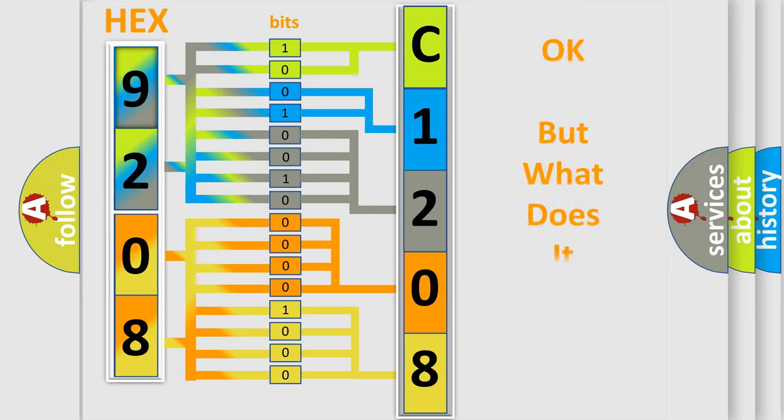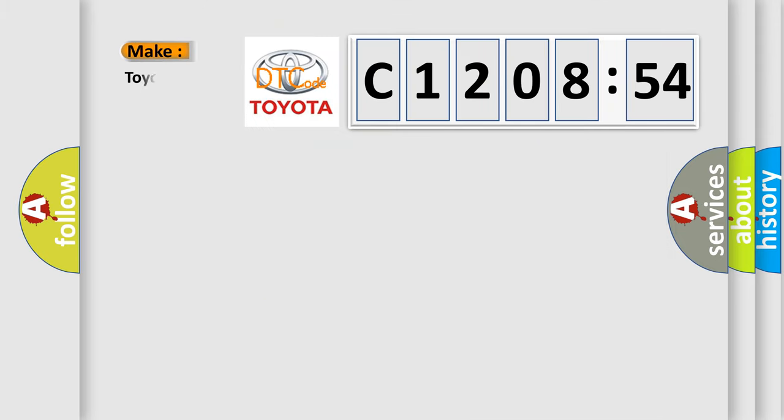The number itself does not make sense to us if we cannot assign information about what it actually expresses. So, what does the diagnostic trouble code C120854 interpret specifically for Toyota car manufacturers?